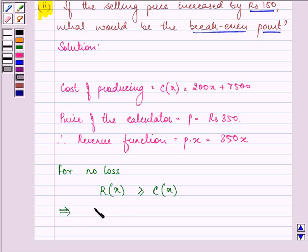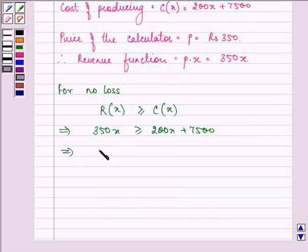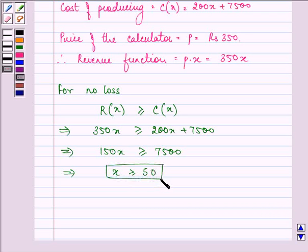This implies 350x is greater than or equal to 200x + 7500. This further implies that 150x is greater than or equal to 7500, so x is greater than or equal to 7500 divided by 150, that is 50.